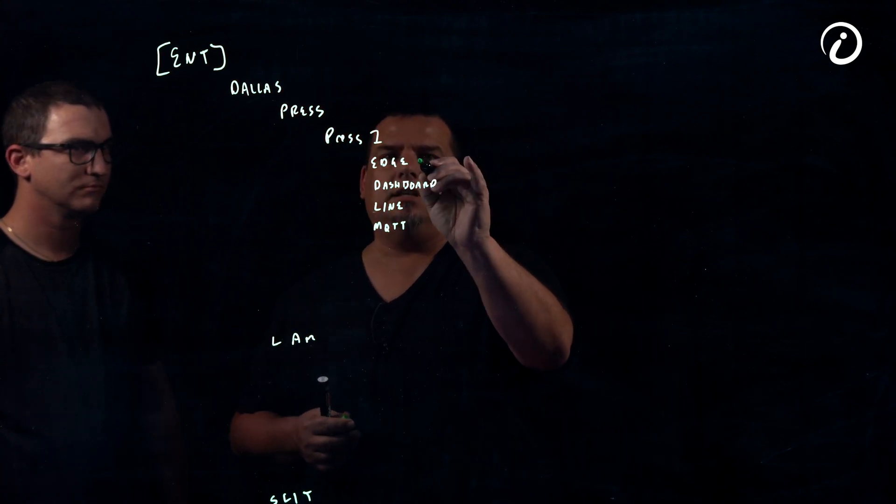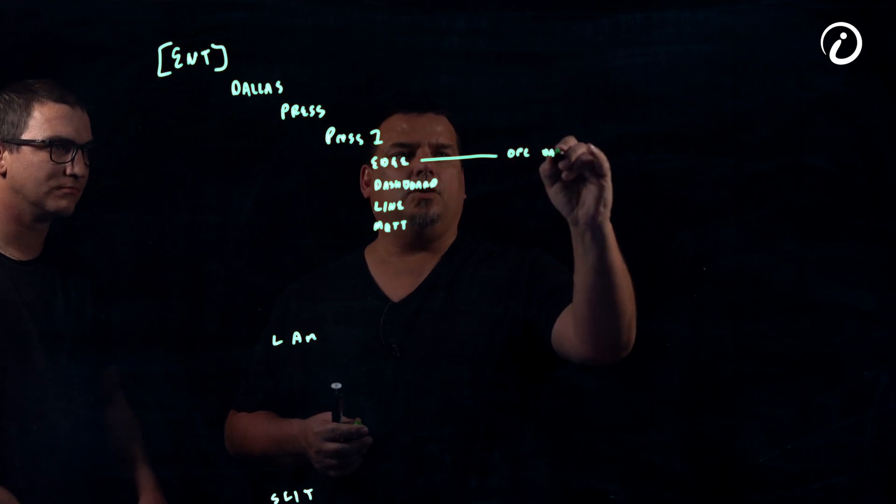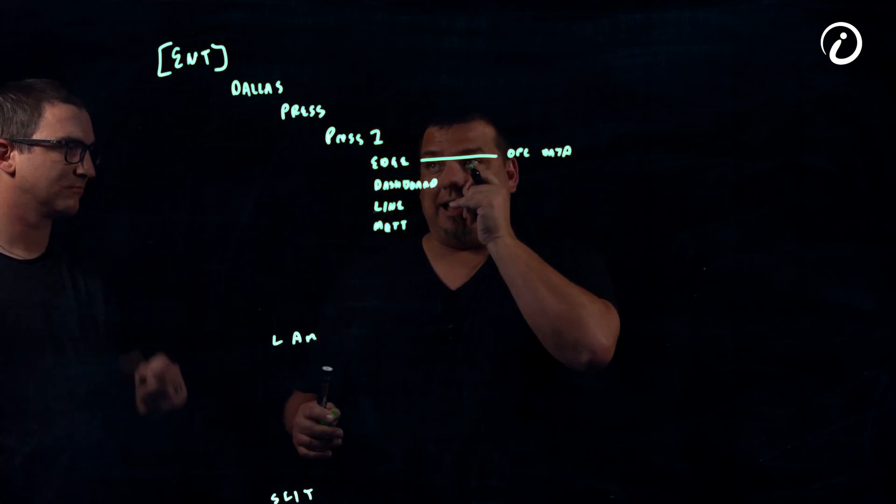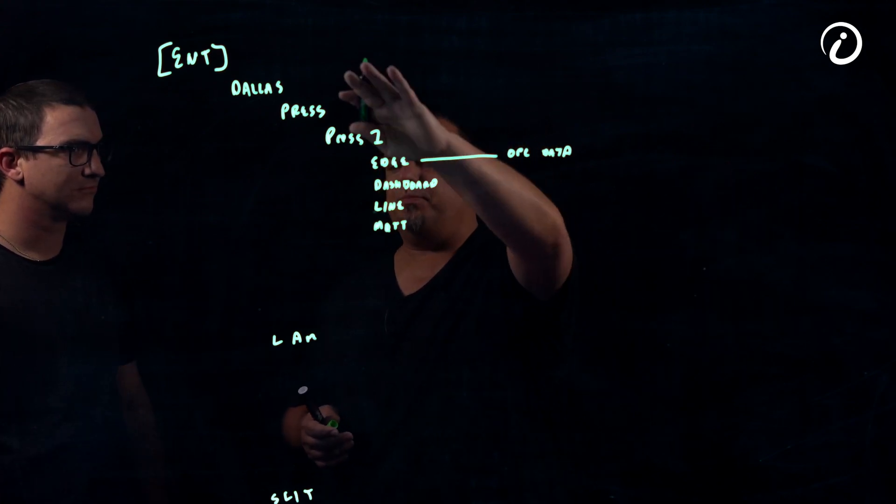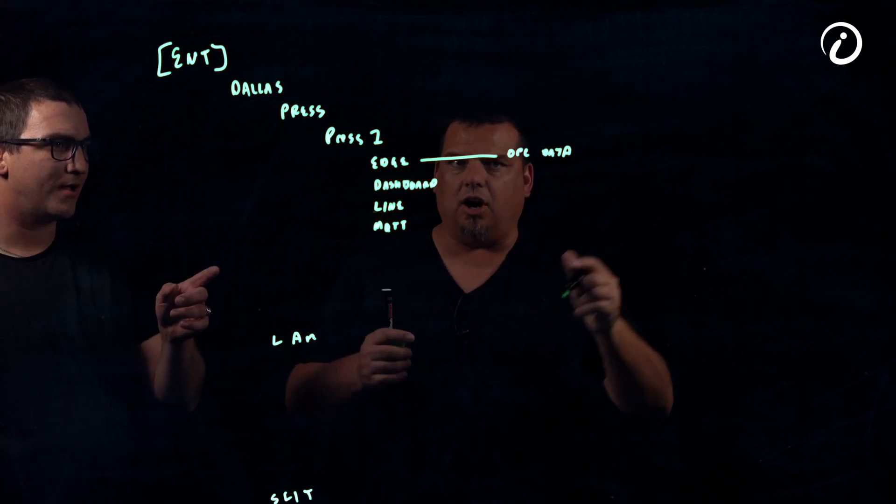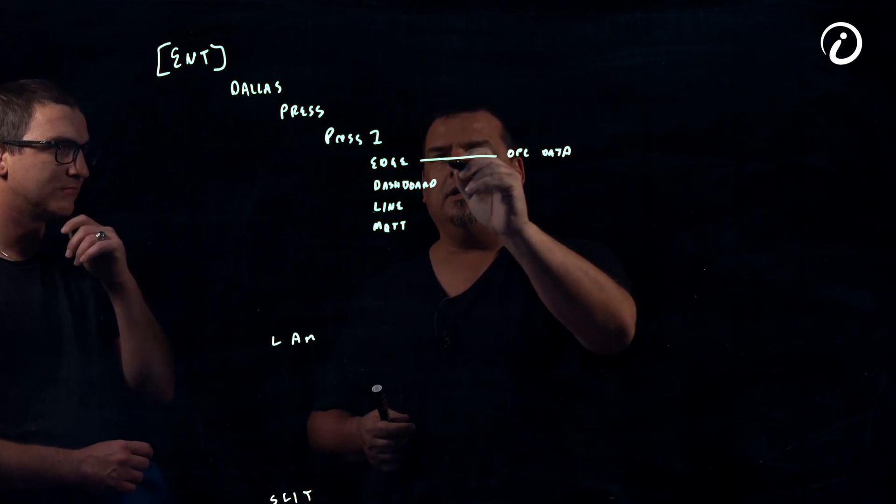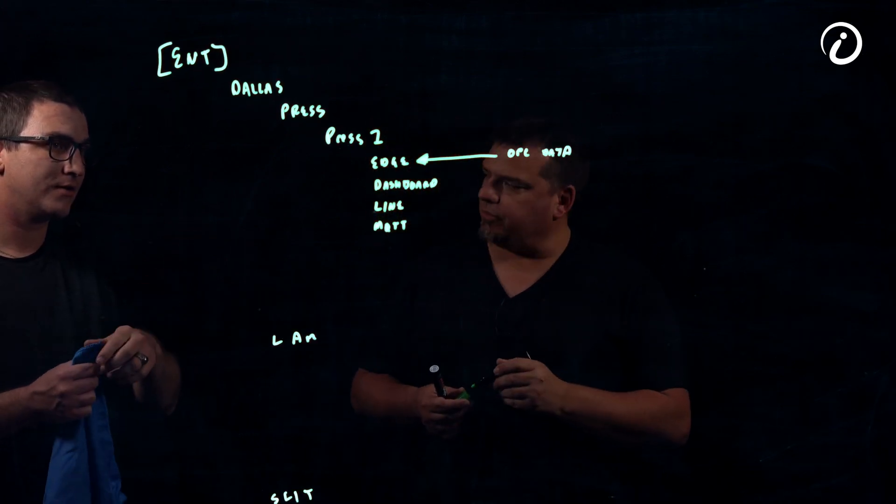So, the Edge namespace is all of the OPC data. In this plant, we have Kepware operating out. Kepware is pulling every one of the machines. There's 16 machines. So, this is all the OPC data. It's all the stuff that's coming inbound from the Edge. We do all the process control and everything from there.